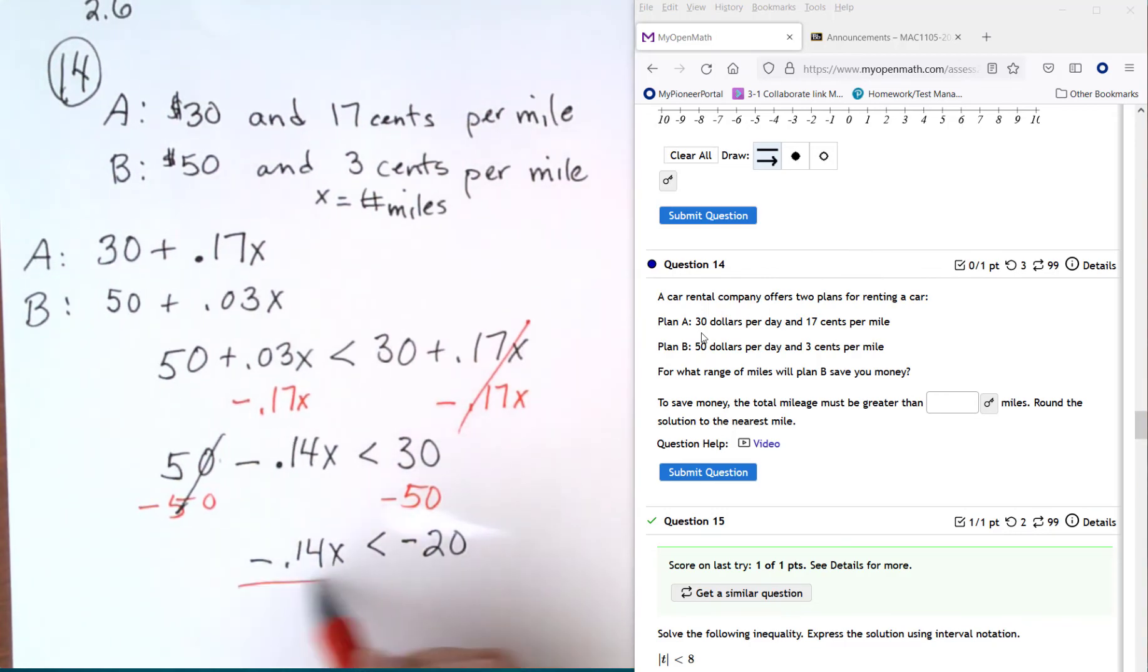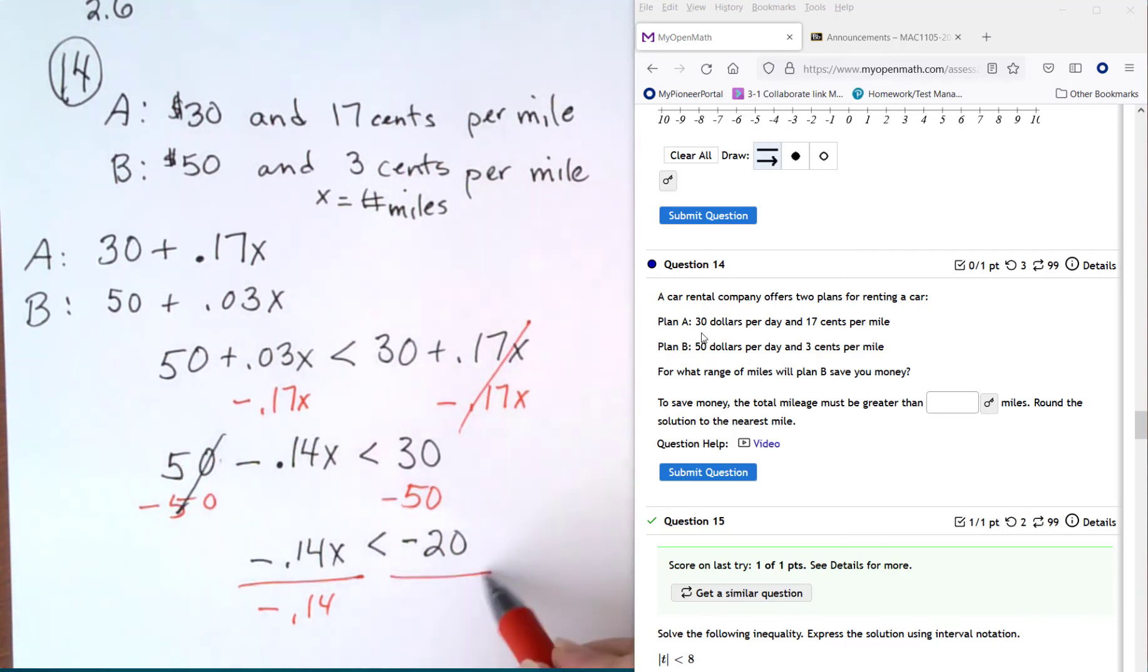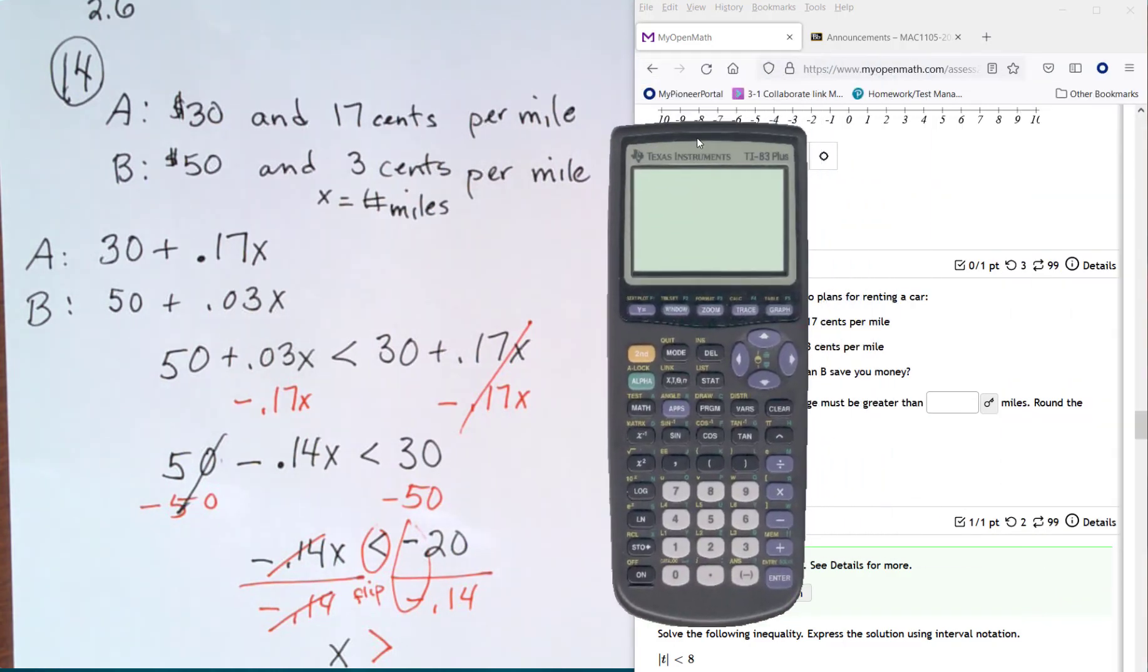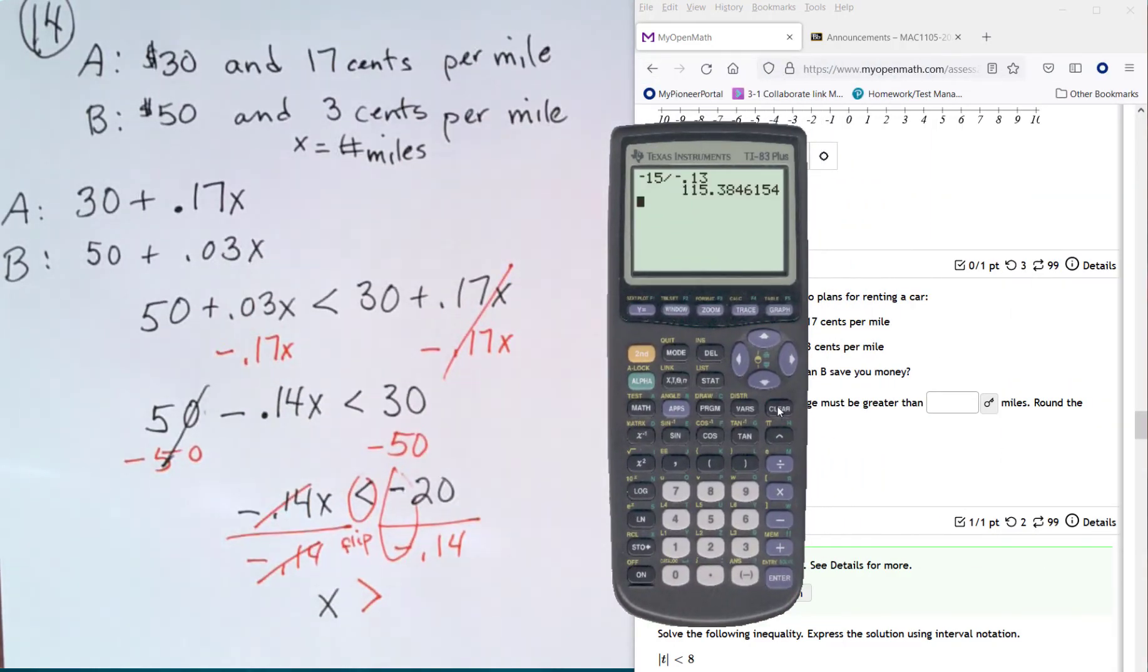And we're going to divide by negative 0.14. So this goes out. So x, remember when you divide by a negative, your symbol is going to flip. Your two negatives here will give you positive. And I'm just going to pull the calculator over real fast. And we'll divide negative 20 divided by negative 0.14. Make sure you're using the negative, not the subtract. And that gives me 142.85.